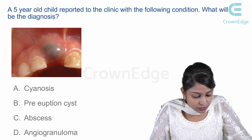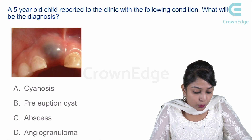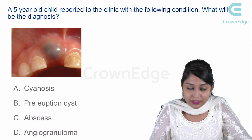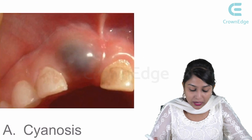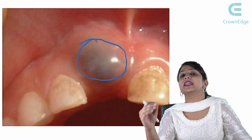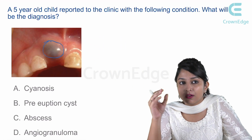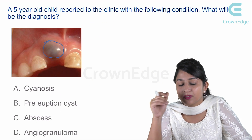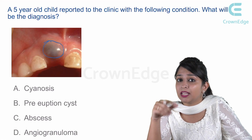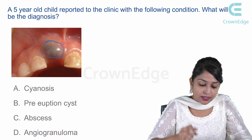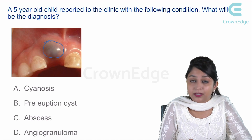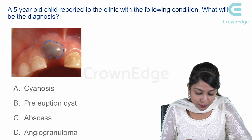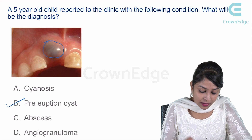A five-year-old child reported to the clinic with the following condition — what is the diagnosis? There's no erupted tooth present, and over the area you can see a blue dome-shaped swelling. In an eruption cyst where there is accumulation of blood inside, it takes on a blue dome-shaped swelling appearance. Since there's an unerupted tooth below with a cyst around it showing a blue dome-shaped swelling, the answer is option B: eruption cyst.